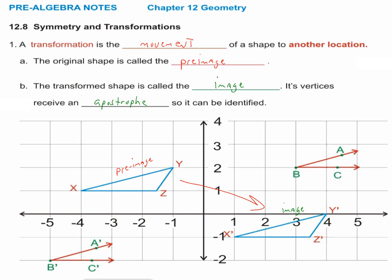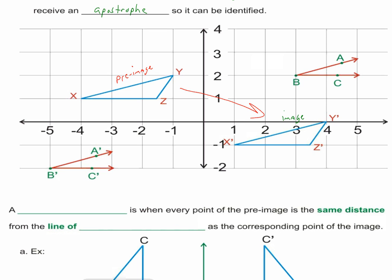Now let's see what happened to move this shape. We have a coordinate system. Starting at point X, if I go down two and right five, I hit X prime. From point Y — again down two, right five — I'm there. And the same is true for point Z: down two, right five.